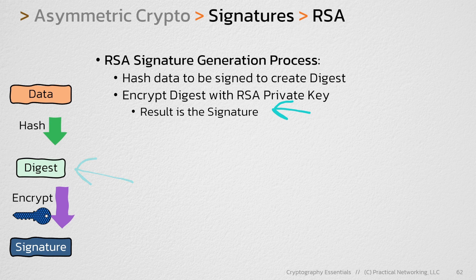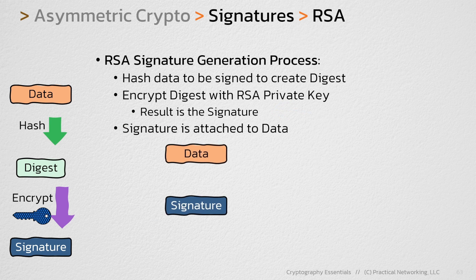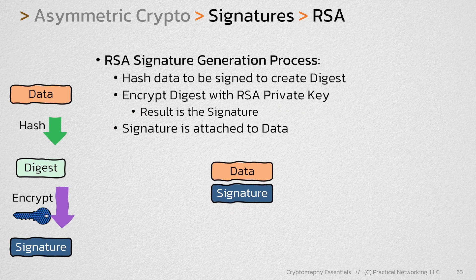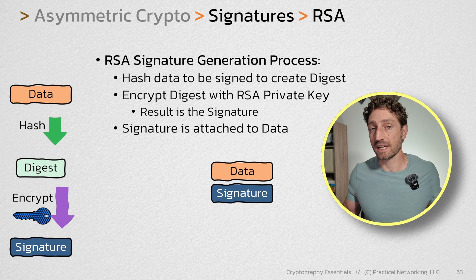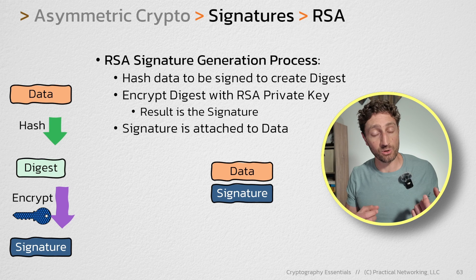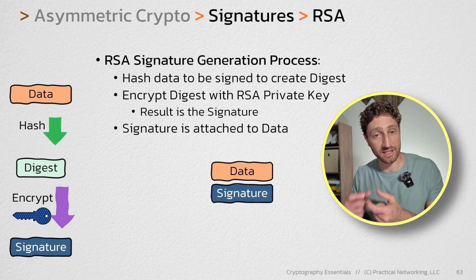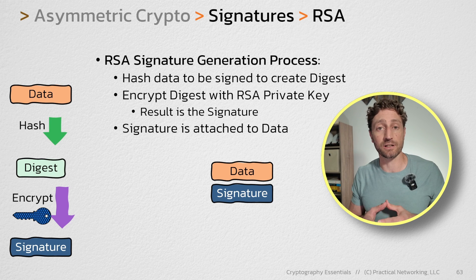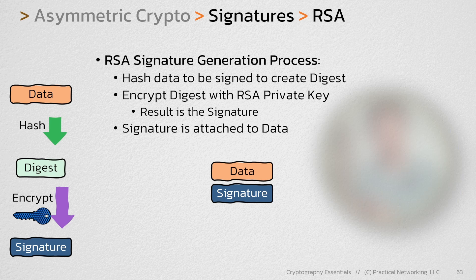So after you create the signature, you can then attach that signature to the data and include it wherever that data goes — whether that be sending that data across the wire or simply including it in the metadata of the file itself on a hard drive. So that's the process to generate a signature.